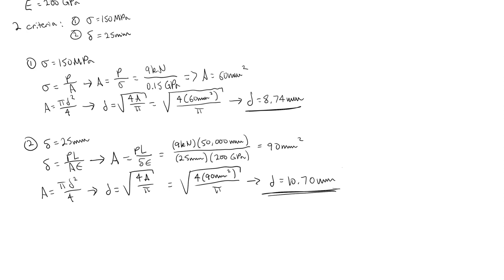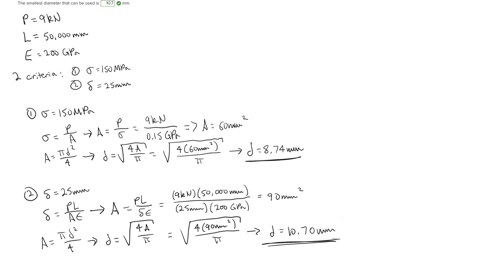We're asked for the smallest diameter. A diameter of 8.74 mm would cause failure in both cases, while 10.70 mm would only cause failure in Case 2 if it were smaller. Therefore, the smallest diameter that can be used without causing any failure is 10.70 millimeters — the larger of the two values governs.